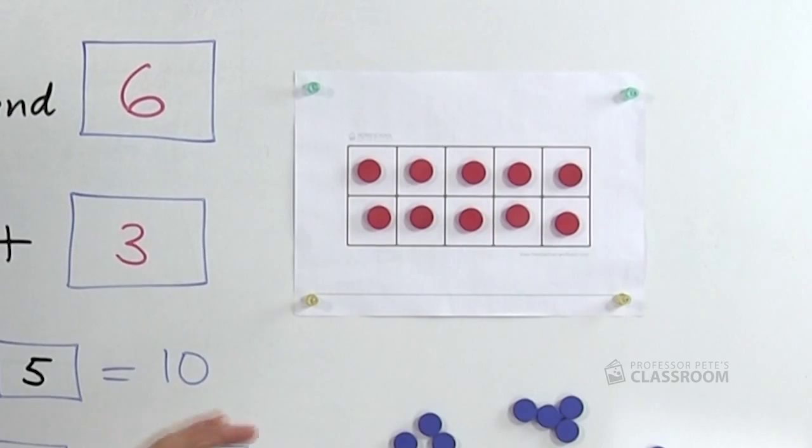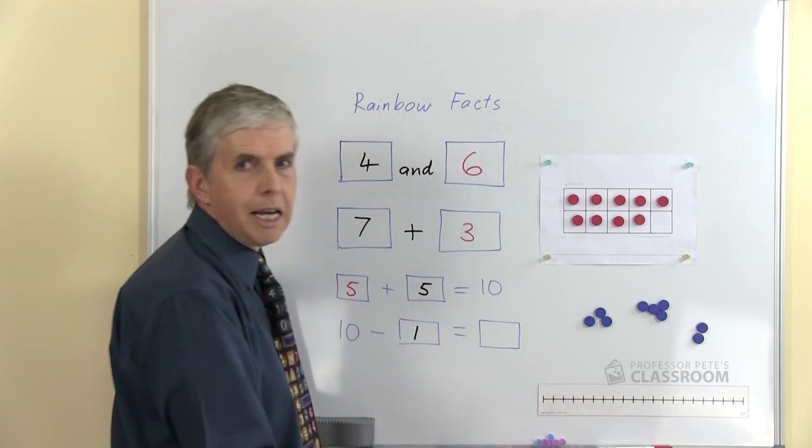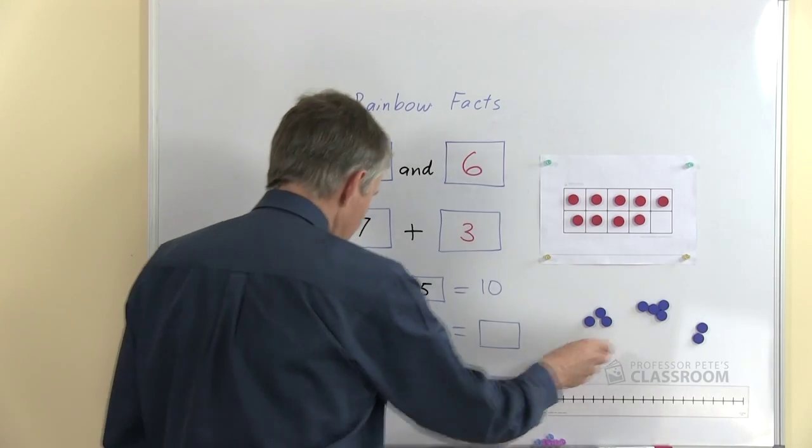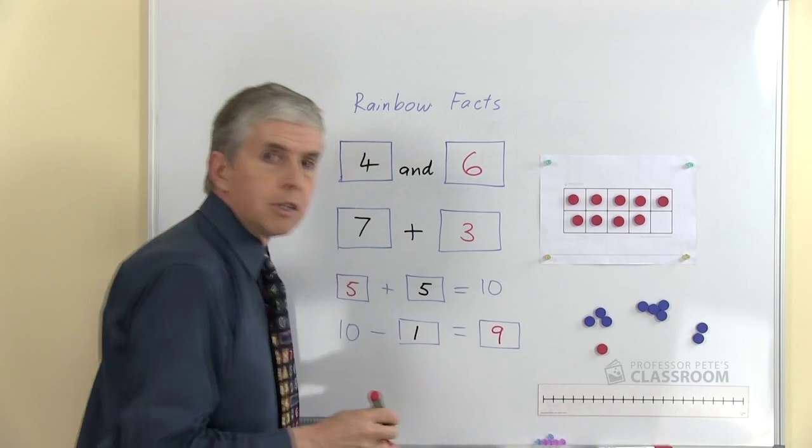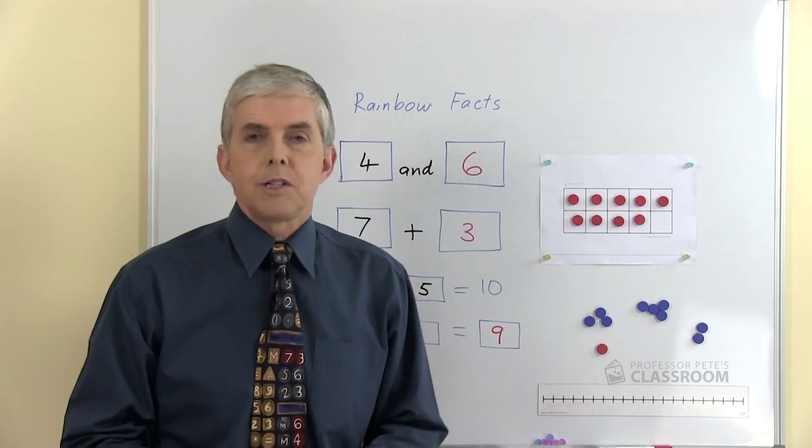If you could do this without actually taking one away, that would be brilliant. But if you need to take it away, of course it's easy to then recognize the number that's left. And of course, our answer is nine. So that's it, rainbow facts with ten frames.